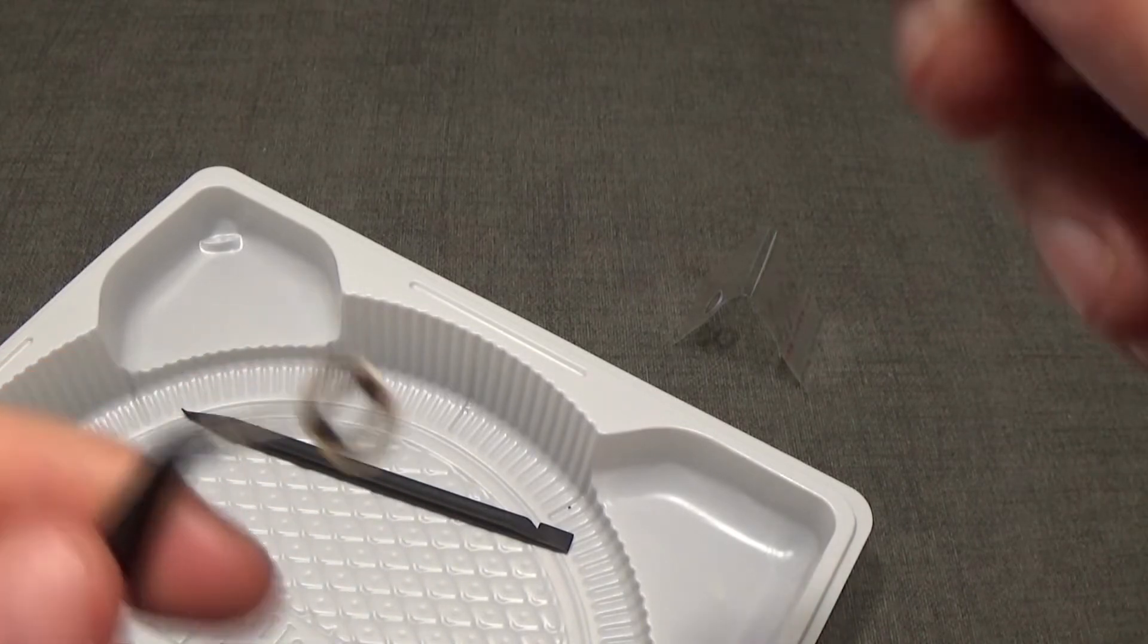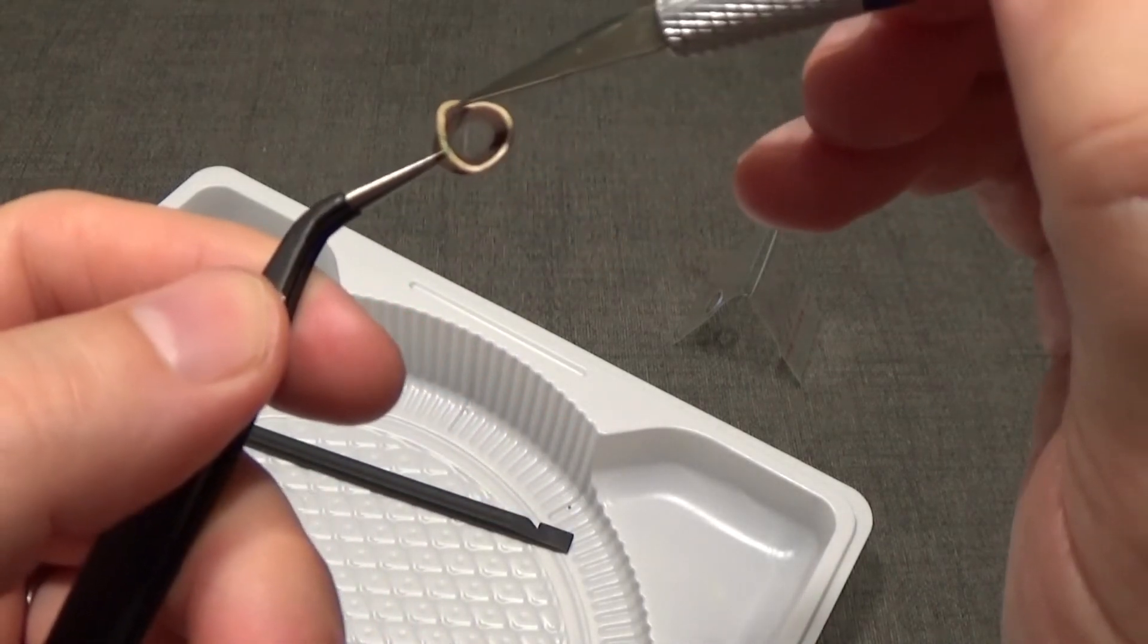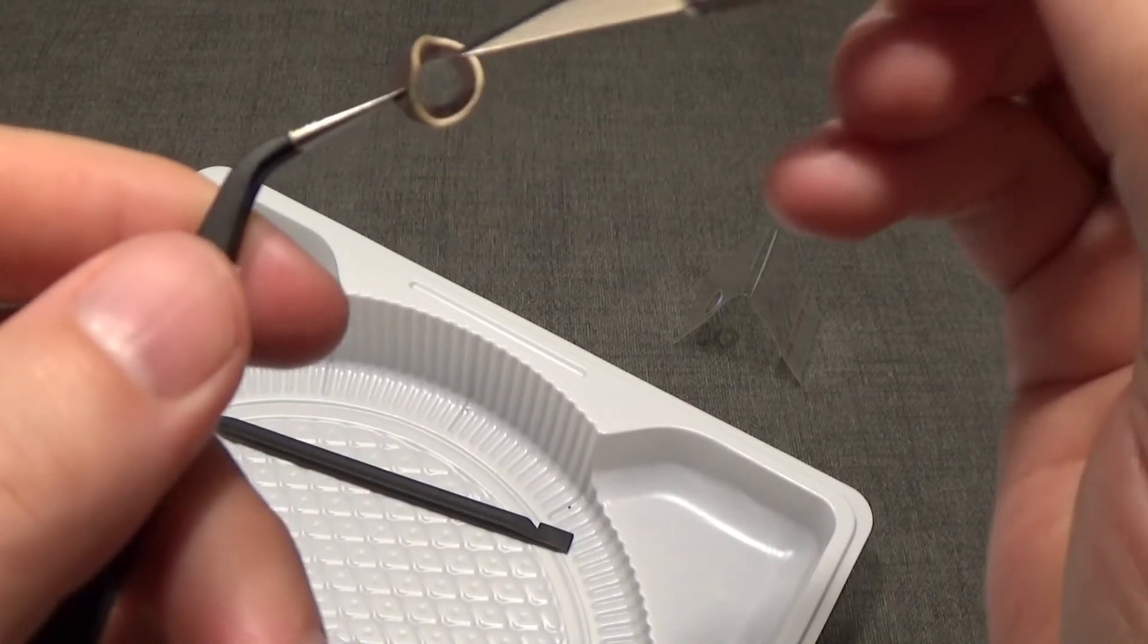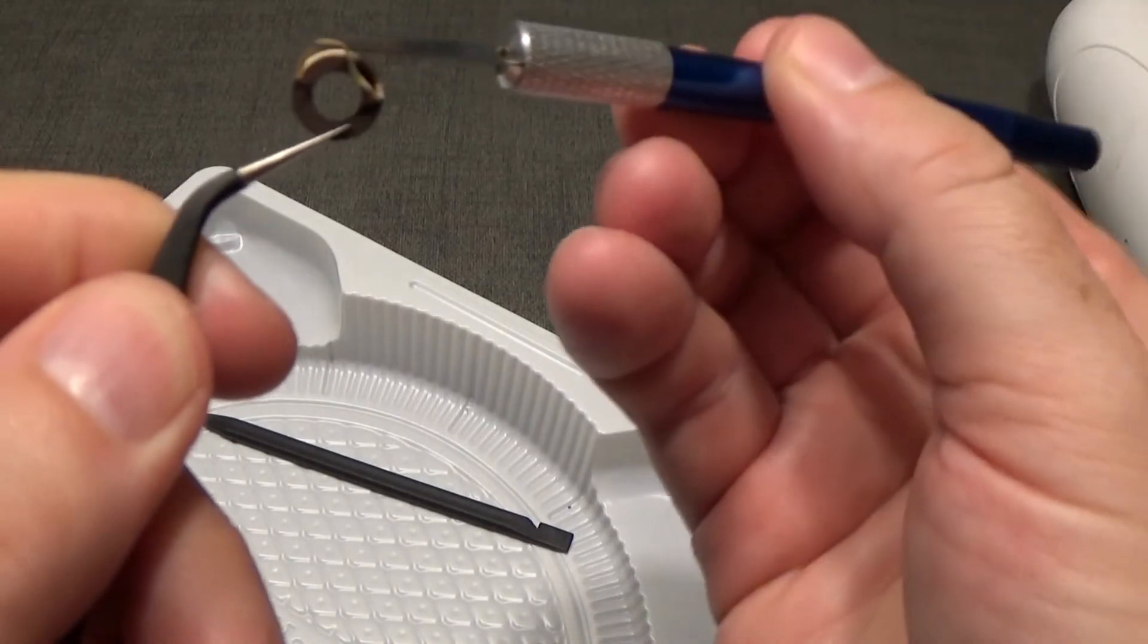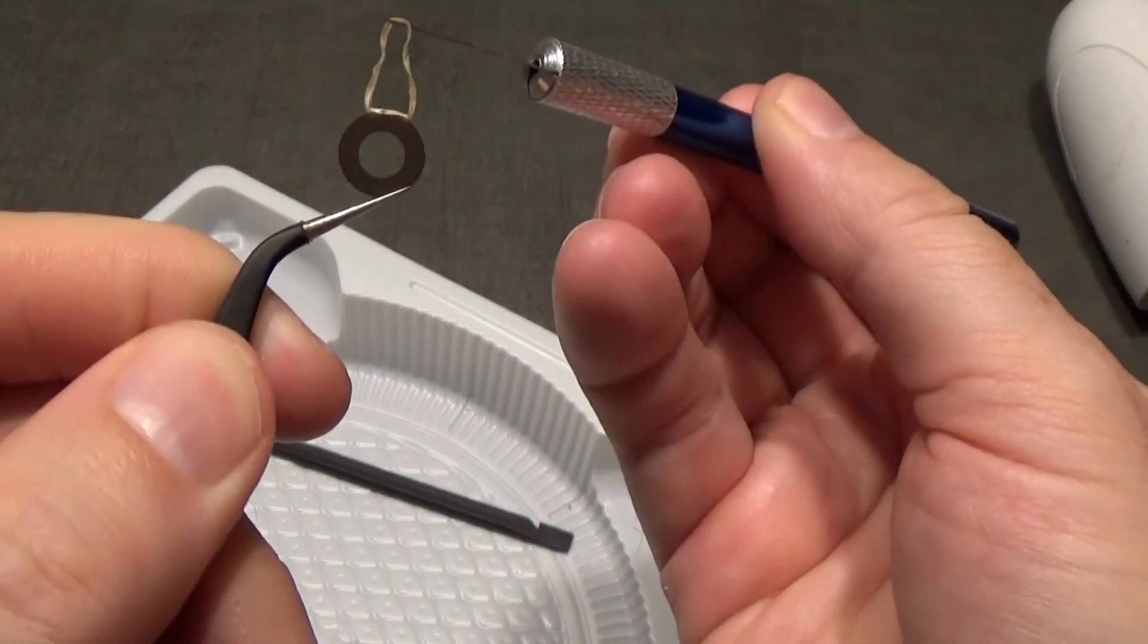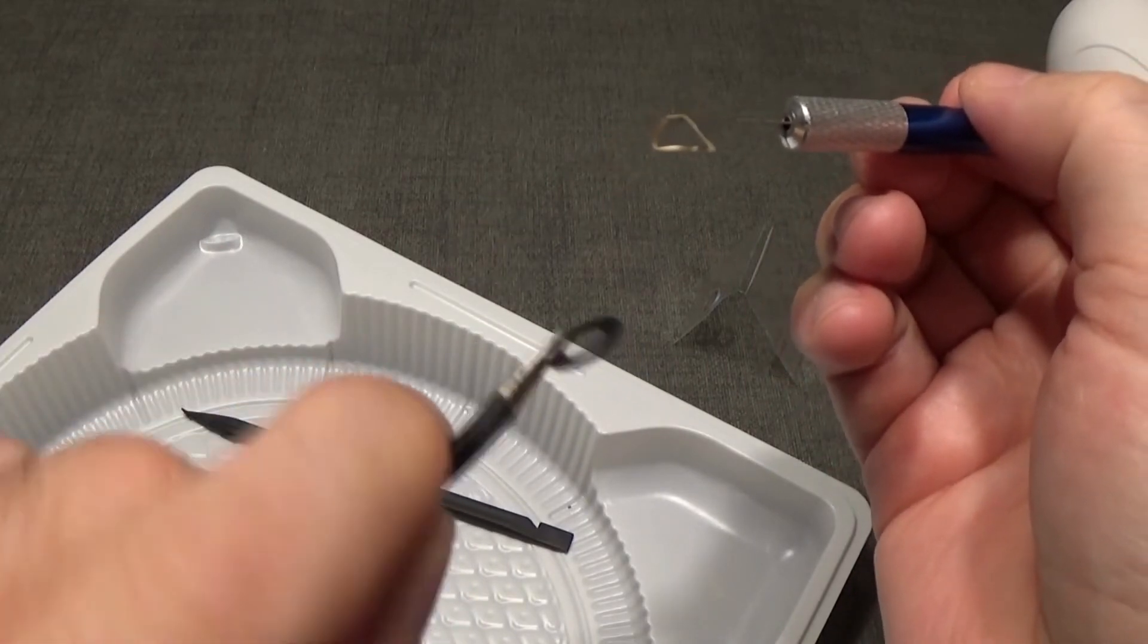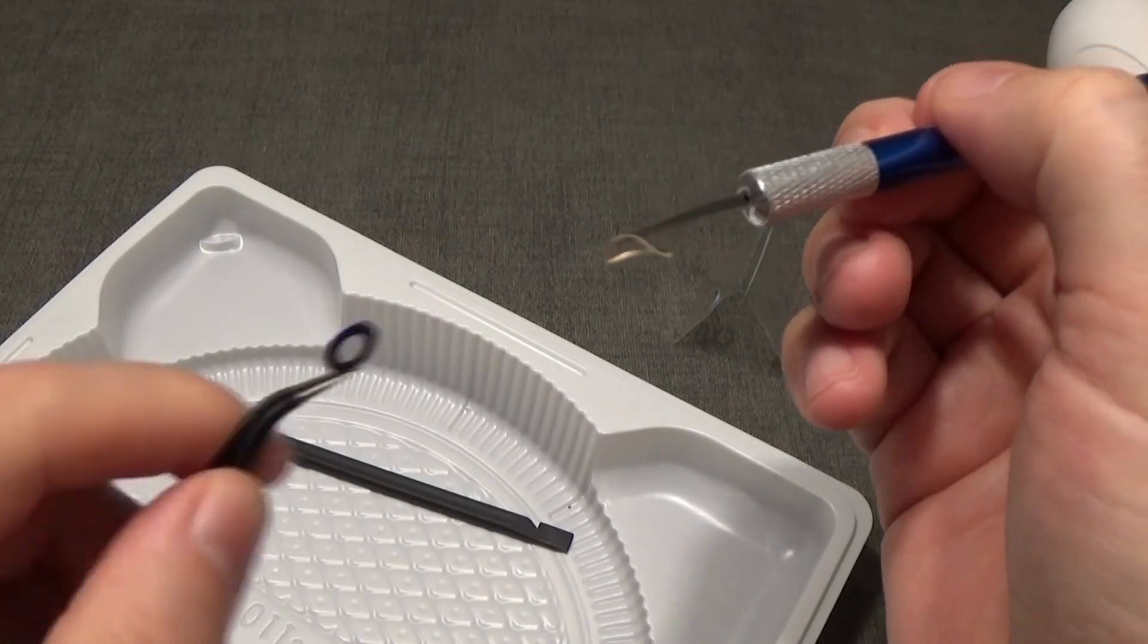Basically the way that I did this is I put this little exacto knife underneath the edge of it, then I pried up and then I use the tweezers to hold it down and you can just peel that right off. This is the sticky side, so I turn it upside down and stick it onto the phone.